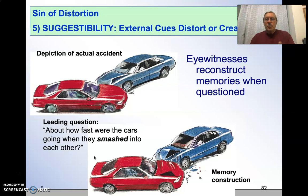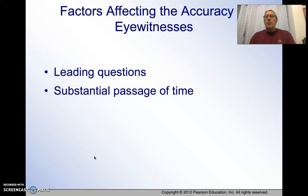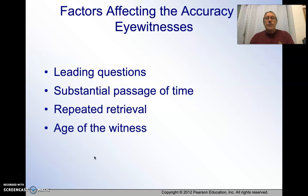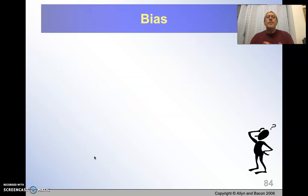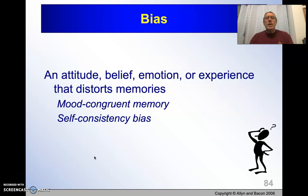Leading questions are really important to consider. Eyewitness accounts are trusted so much in courts, but in reality they are very inaccurate. In fact, if we were to sit down with 12 people who had watched a car accident in a parking lot, we would get 12 different answers, depending on a variety of factors including your confidence. There's also bias, mood-congruent memory, and self-consistency bias — we tend to unconsciously remember events as being congruent with our expectations.